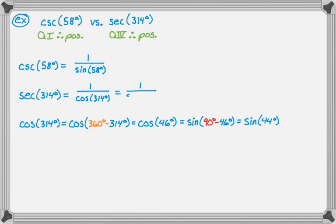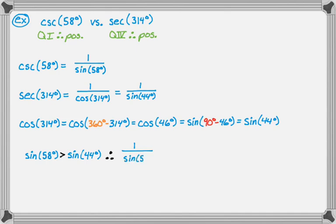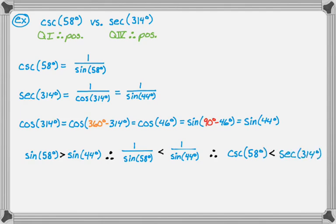Converting cosine of 46 to sine: sine of 90 minus 46 equals sine of 44. So secant of 314 equals 1 over sine of 44. Since sine of 58 is greater than sine of 44, taking reciprocals flips the inequality. Therefore cosecant of 58 is less than secant of 314.